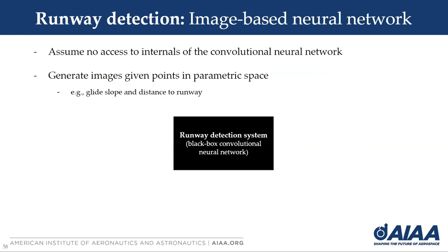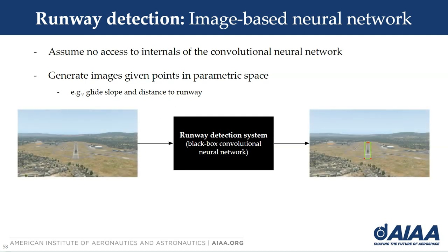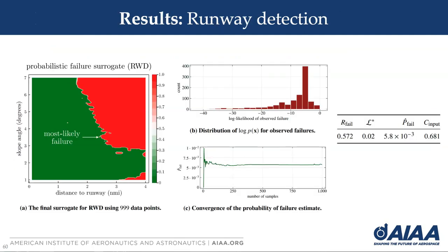Now to the real-world case study: a neural network based runway detection system common in autonomous flight operations. Because the system is intended to be active only during the landing phase, we condition on the aircraft being in the approach and consider failures as misdetections or false negatives. We generate a set of inputs in parametric space to produce an image and pass it through the runway detector to produce a detection. Taking the final surrogate after 999 samples, we can look at the most likely failure, which is a small pocket in the design space. We can also triage by sorting failures by likelihood and prioritizing fixes accordingly. The algorithm converges to a stable probability of failure estimate in about 400 samples, and the distribution of log likelihood for observed failures is right-skewed, indicating that we're finding more failures that are highly likely — meaning more useful failures.